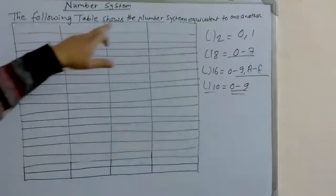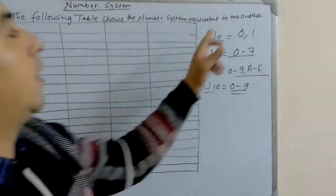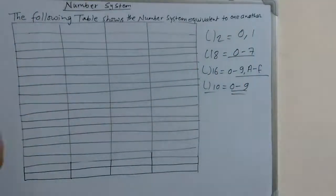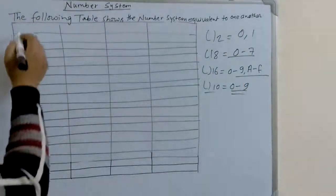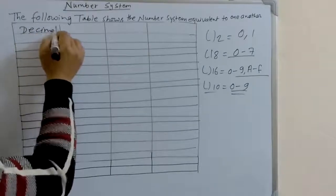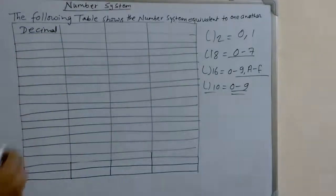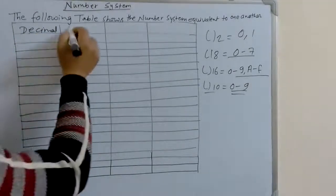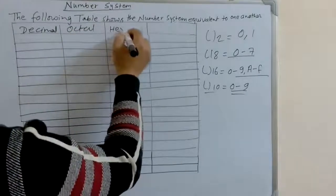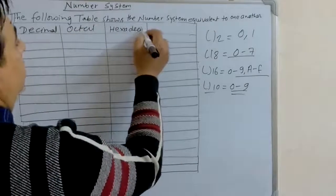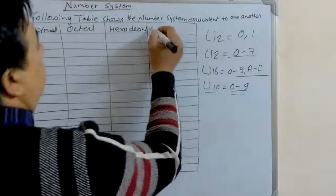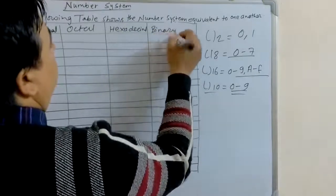The following table shows the number systems equivalent to one another. We write here: decimal number system, then octal number system, and hexadecimal number system — and their equivalents in the binary number system.